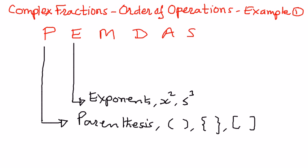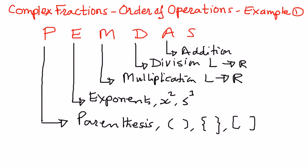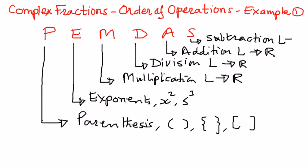We're going to work within the parenthesis and then open up the parenthesis. M stands for multiplication — we're going to perform multiplication from left of the equation to the right. Then D — we're going to perform the division operation from left to right. Next, we're going to perform addition from left to right, and lastly subtraction from left to right. PEMDAS is a word we have coined for this order of operations process.